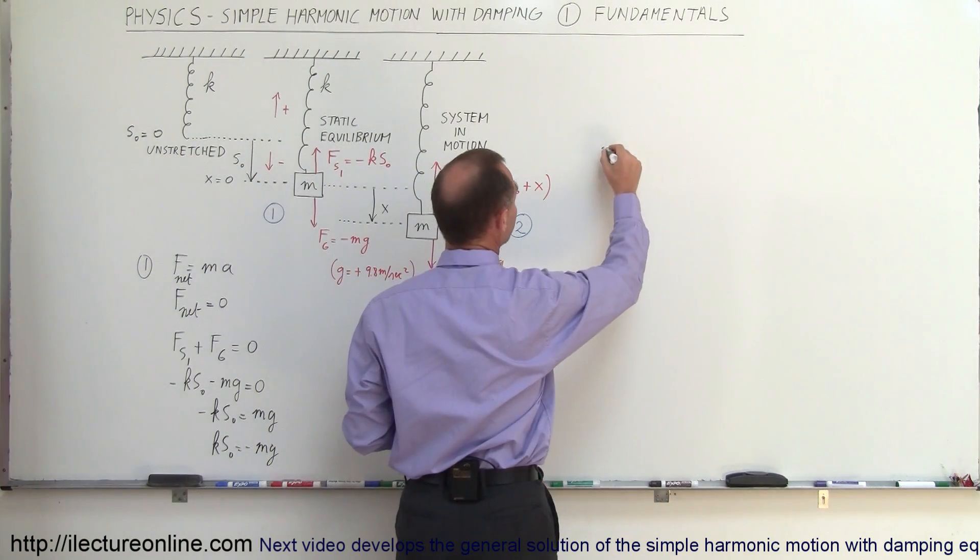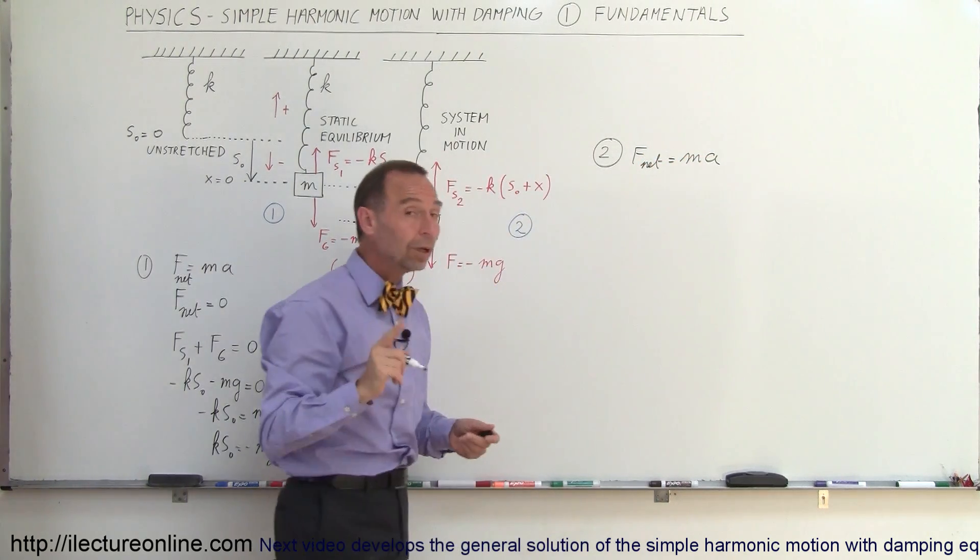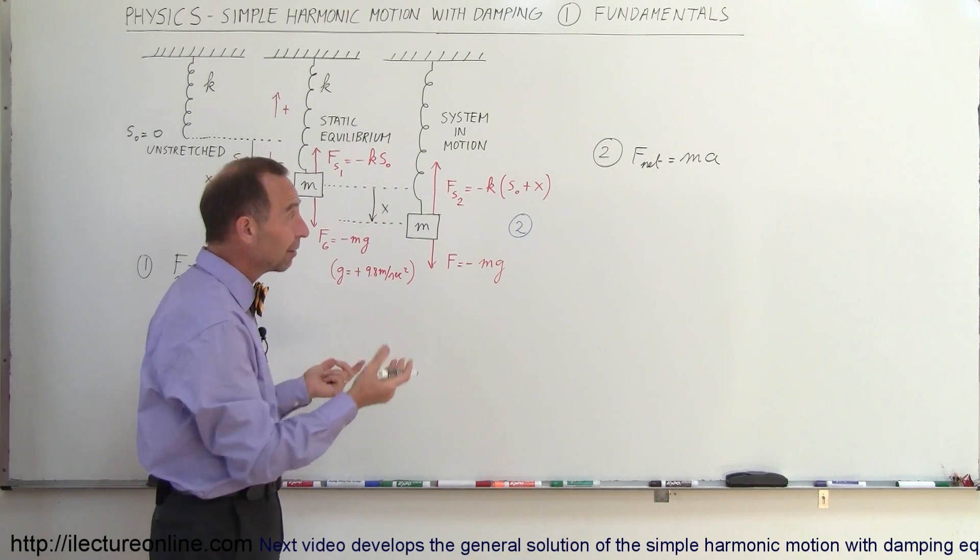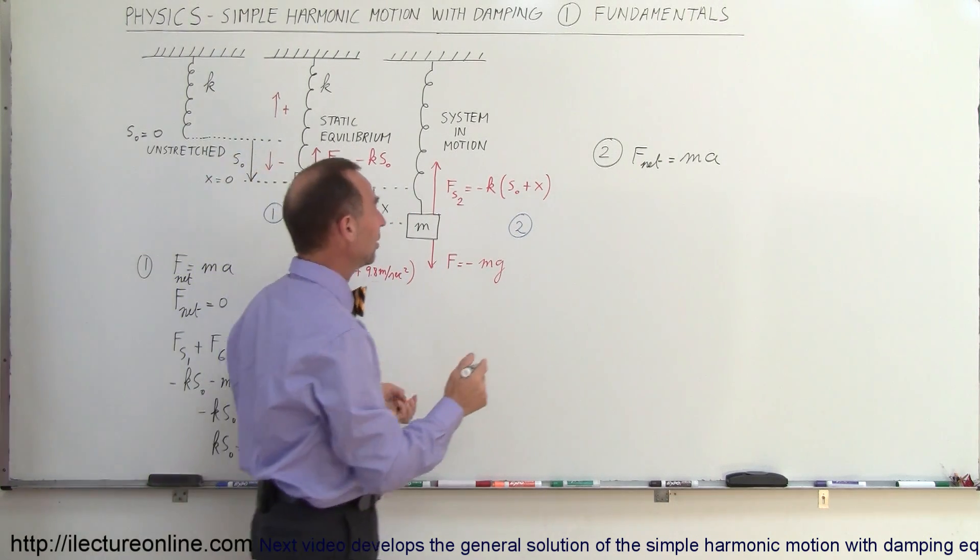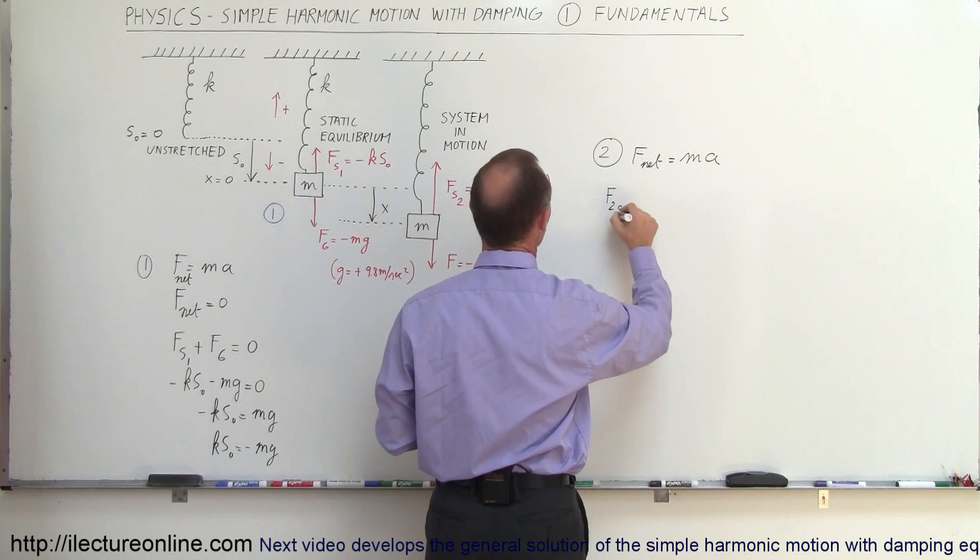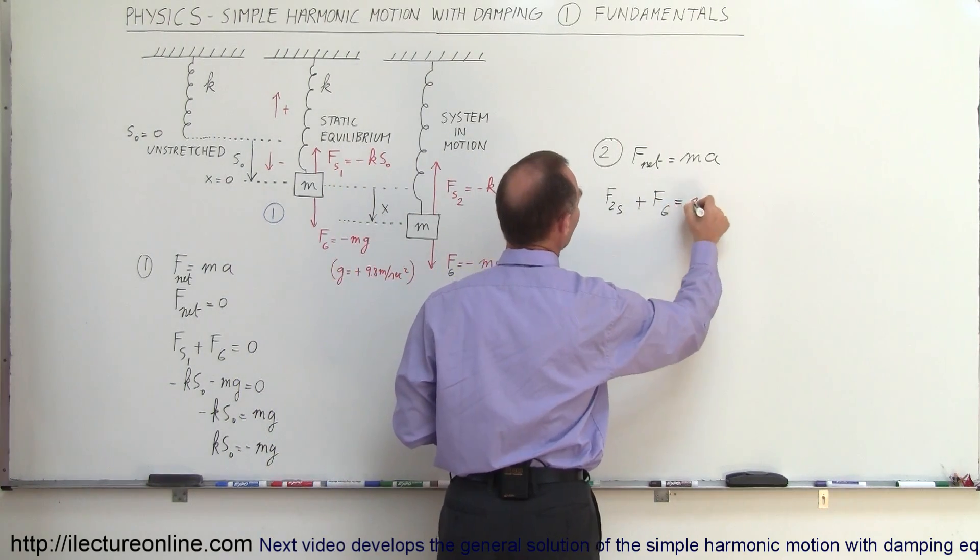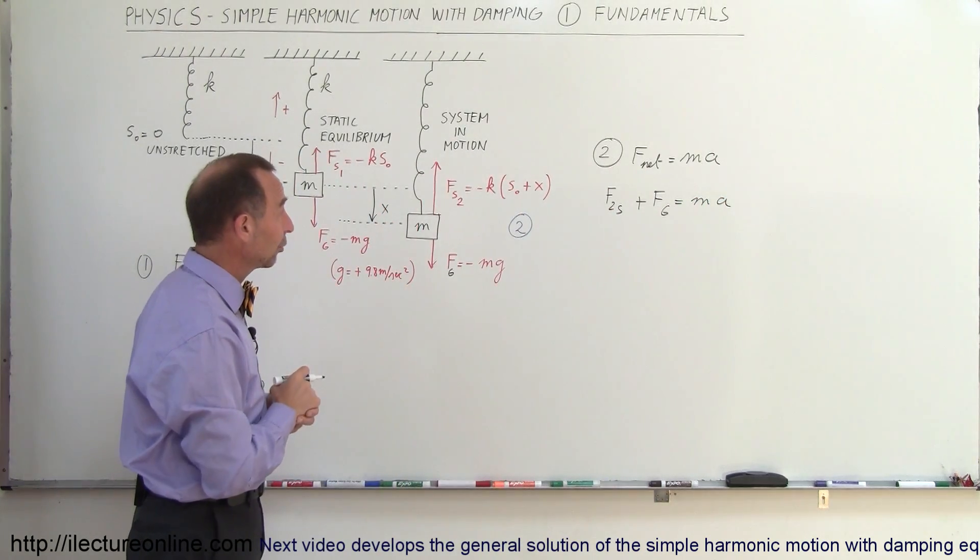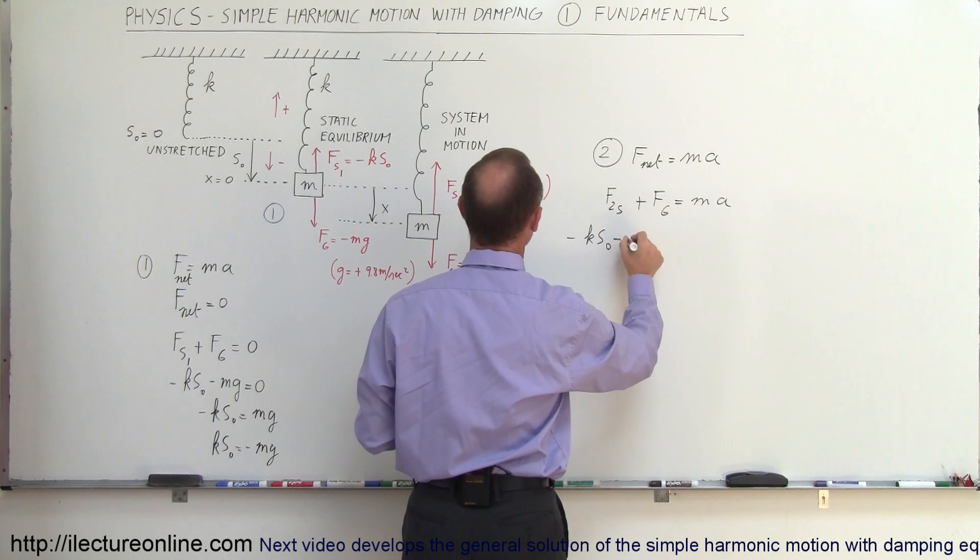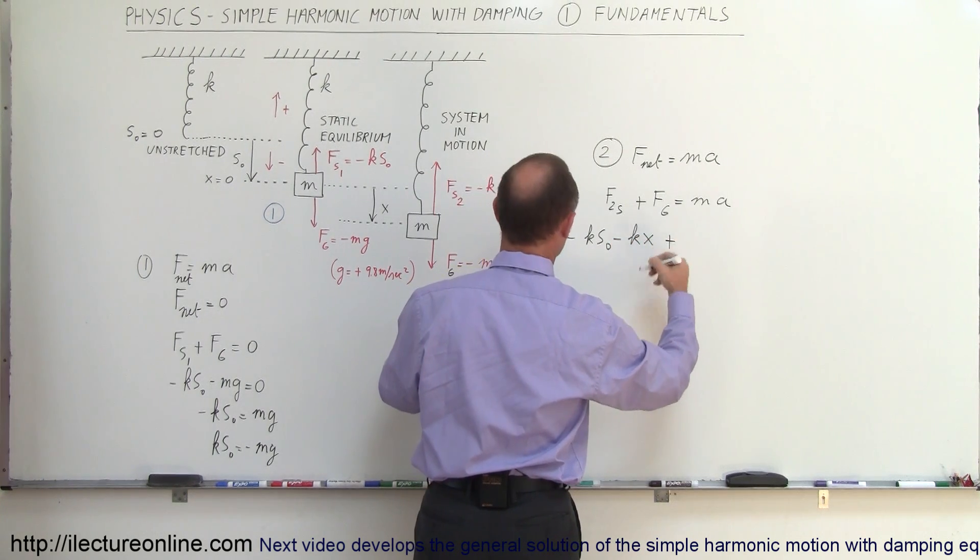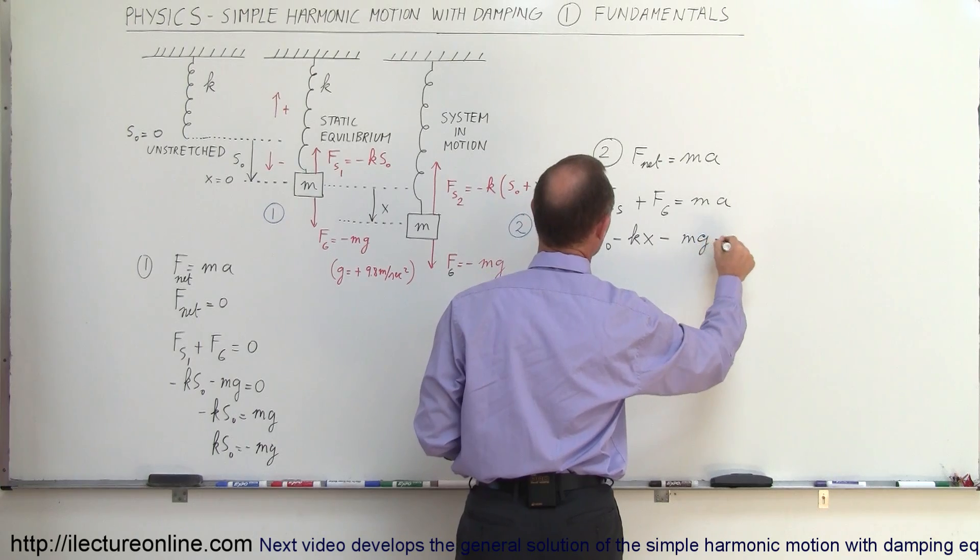So what we're going to write here in case number two: f net equals mass times acceleration. In this case, there will be an acceleration because it is constantly changing speed. So it's going to be the sum of these two: f2s plus f due to gravity equals m times a. Now when we put in what those are equal to, we can say that f2s is equal to minus ks sub naught minus kx plus minus mg equals ma.